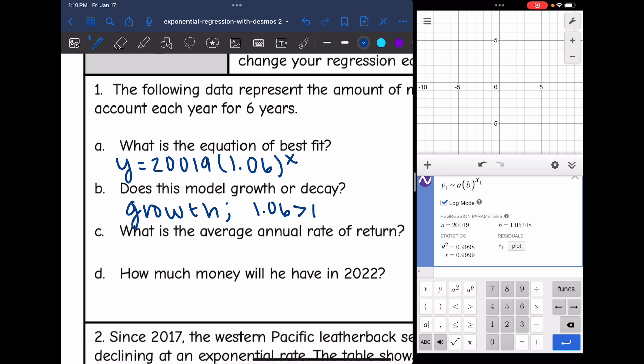And it says, what is the average annual rate of return? That would be how much it's growing by. To figure that out, I would do 1.06 minus 1, which is 0.06, which means that is a 6% growth rate.